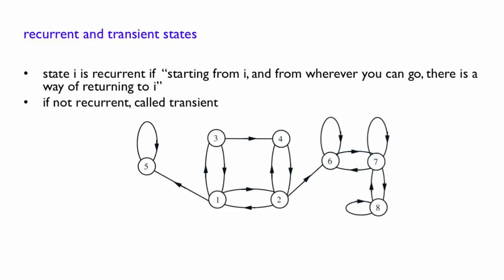For example, starting from state 8, no matter where you go, there is always a path back to 8. So 8 will be said to be a recurrent state. For the same reason, 7 will also be a recurrent state, as well as 6. Now what about 5? From 5, the only state where you can go to is 5 itself. So 5 is also a recurrent state.